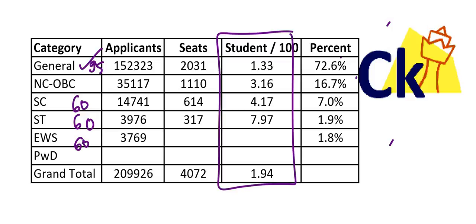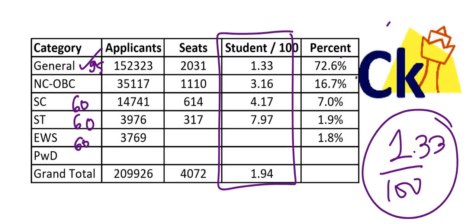Trust me, it's a good number. The ratio of 1.33 is obviously less when compared to others, but for OBC, SC, and ST, the ratio is better — around 1 in 5 people who get the call will convert. So that should be your target.